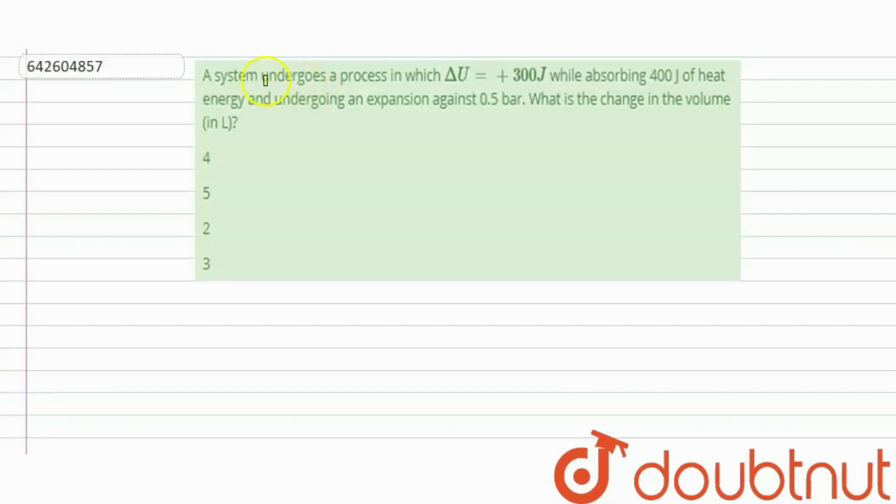Hi everyone, let's take a question. Here the question says: The system undergoes a process in which delta U is equal to plus 300 Joule while absorbing 400 Joule of heat energy and undergoing an expansion against 0.5 bar. What is the change in the volume in liters?